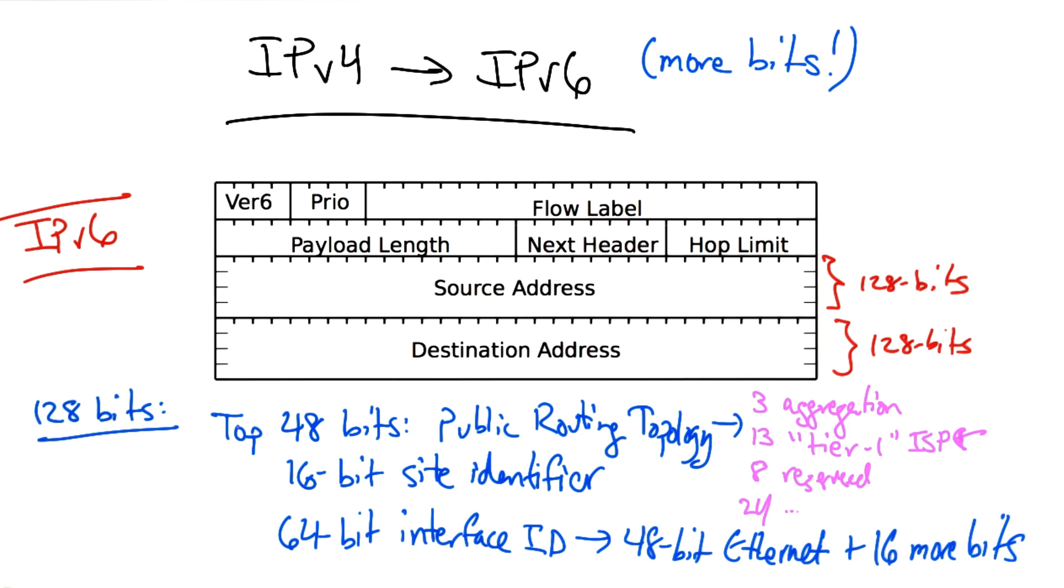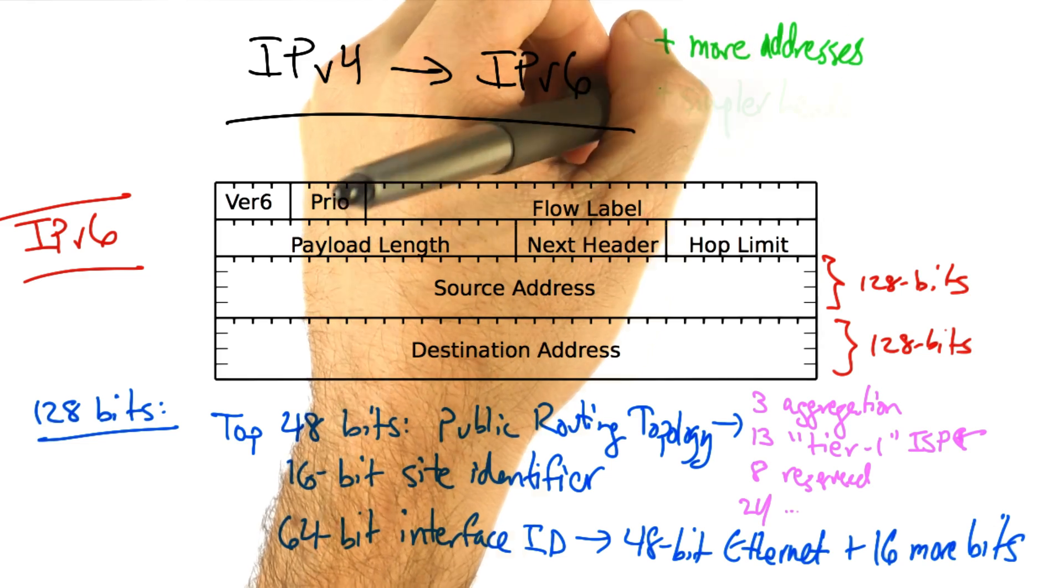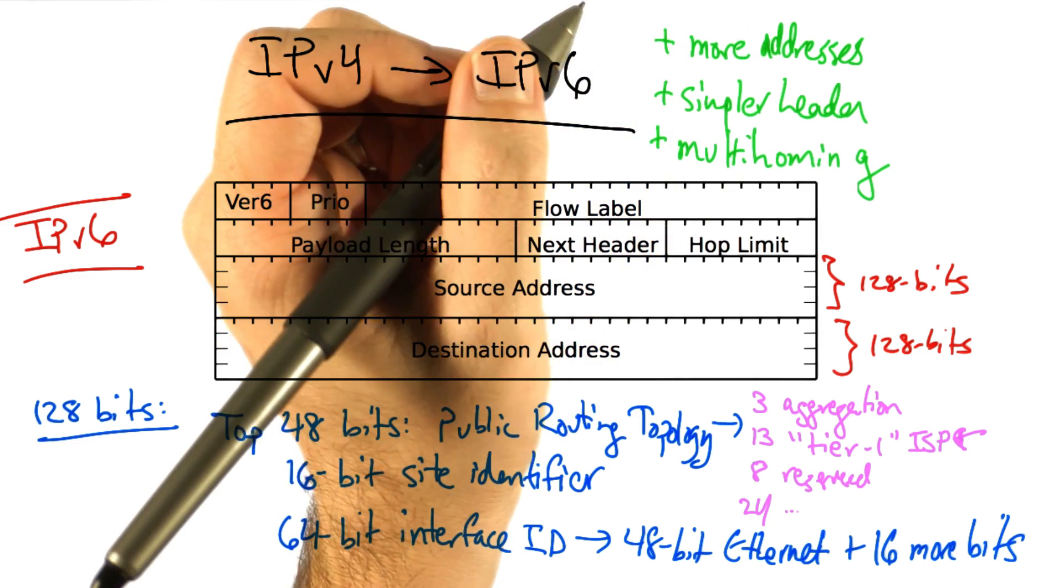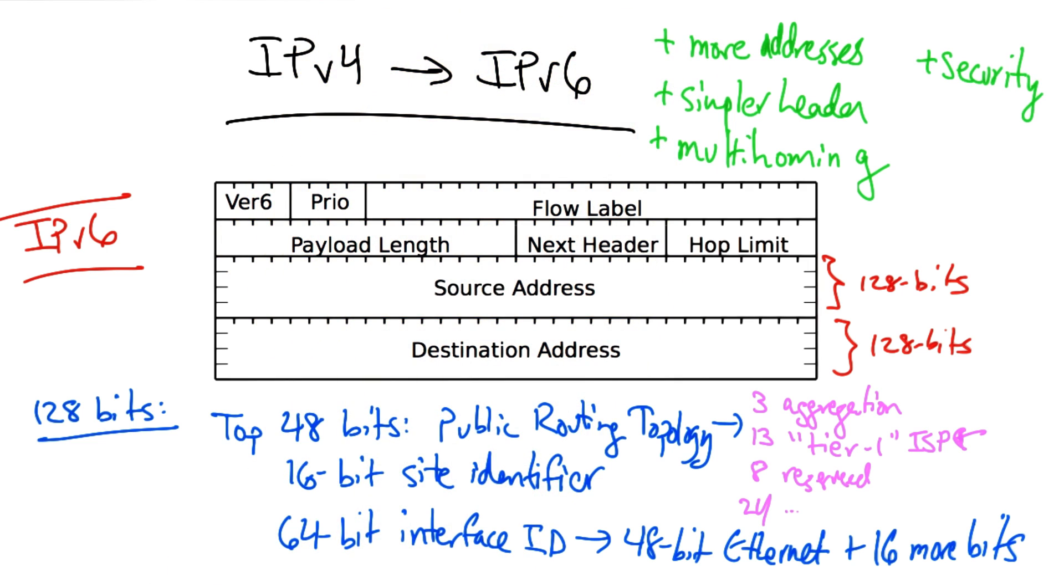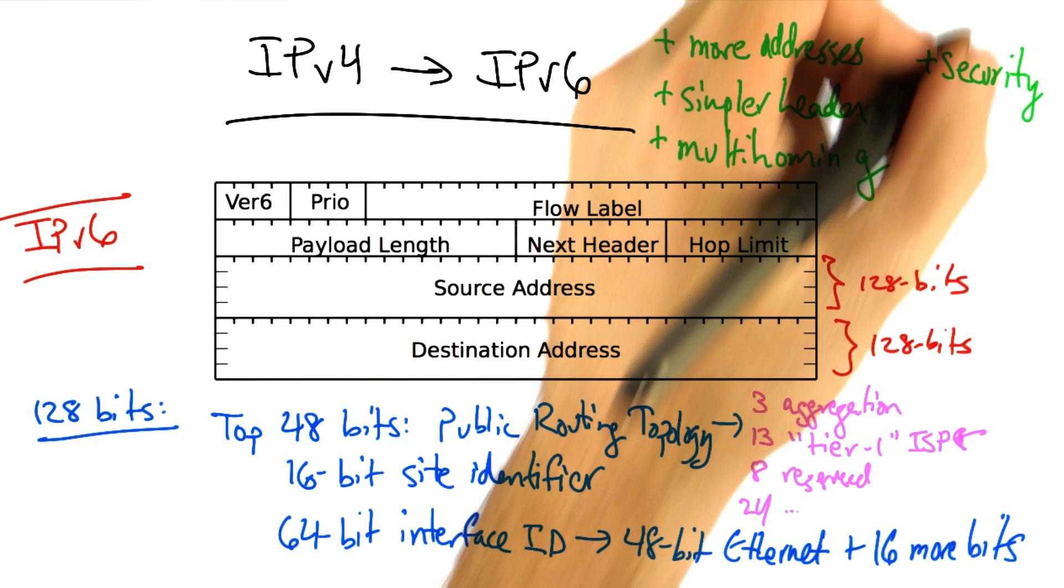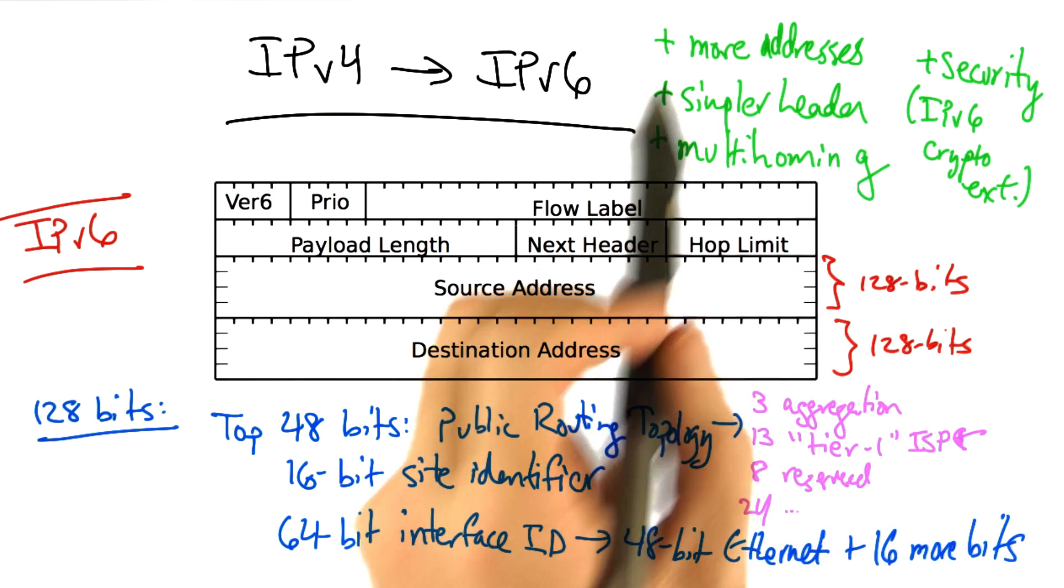IPv6 has many claimed benefits. There are more addresses, the header is simpler, multi-homing is supposedly easier, various aspects of security are built in, such as the IPv6 crypto extensions.